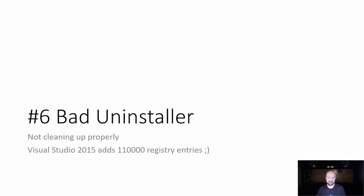Number six: bad uninstallers. Make sure that when you uninstall the app it actually cleans up after itself. There are certain things that really mess up the operating system, and when you remove them they leave the mess behind. Sometimes it's especially important — for example, when you install Visual Studio 2015, it installs 110,000 registry values. So it's not nice if the uninstaller doesn't clean up properly.